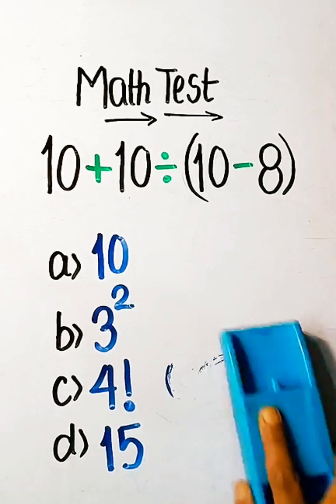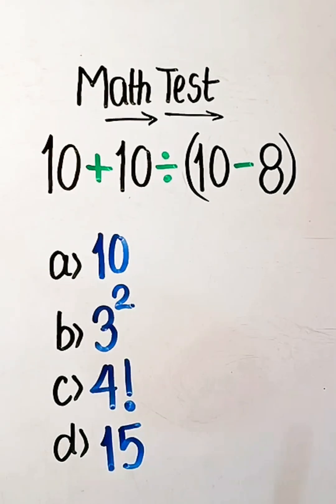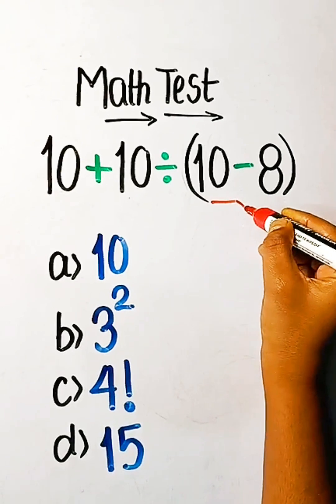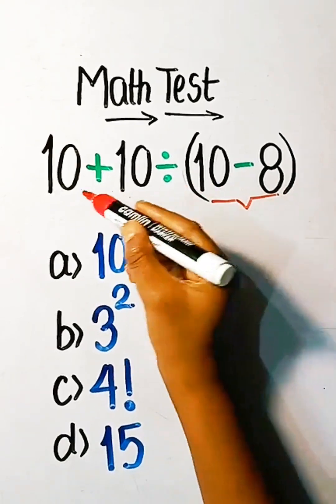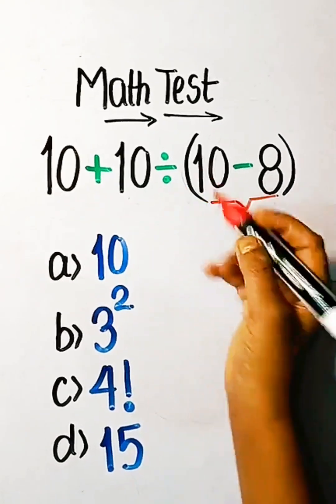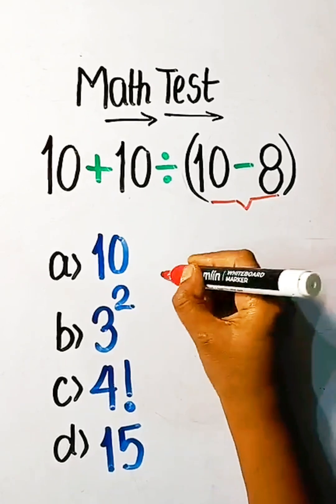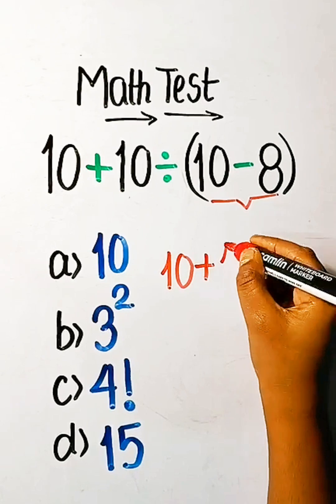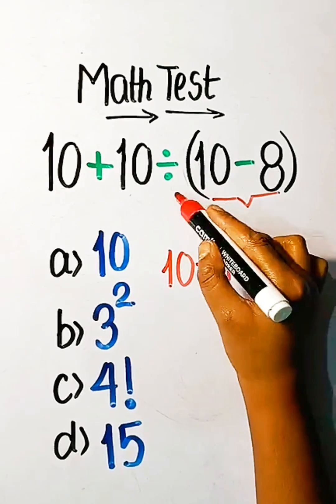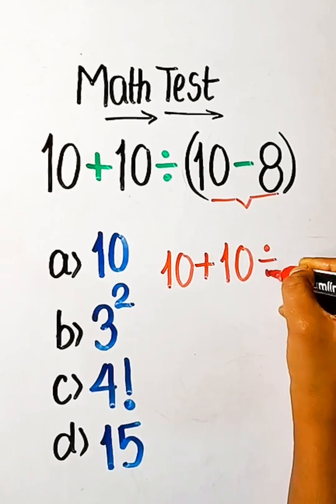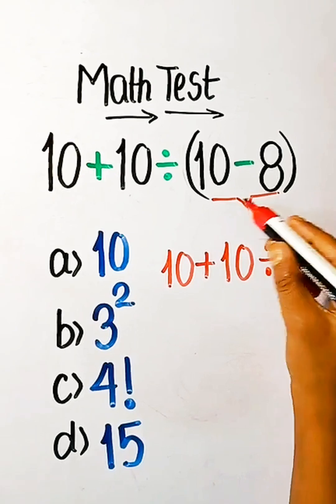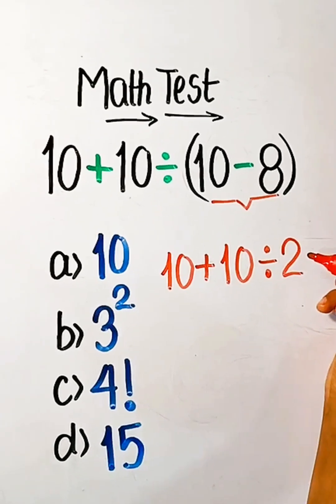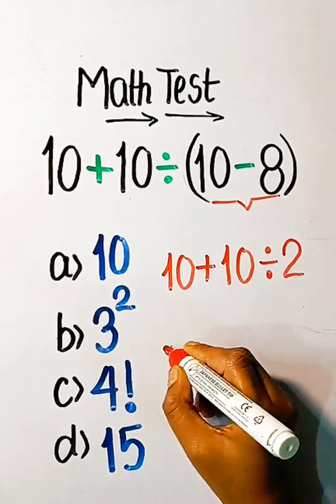Now it's time to solve the equation. According to BODMAS, the bracket opens first. We start from left to right, so we can write here 10 plus 10 divided by... 10 minus 8 is 2, and then...